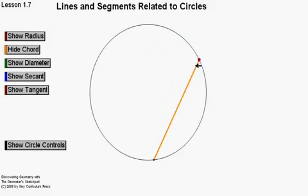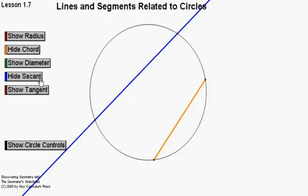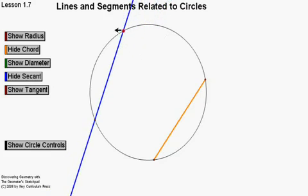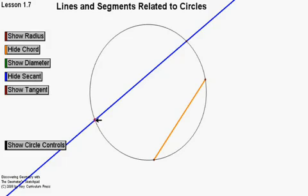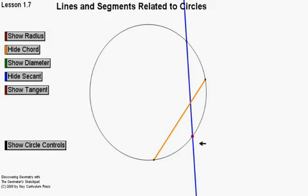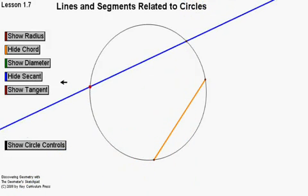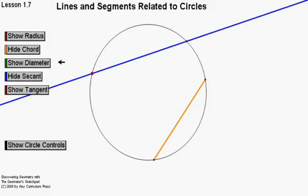Now, what's the difference between a chord and a secant? A secant is a line — not a line segment, but a line — that goes through the circle. I can move the points around, but you can see it still remains a line going through the circle, hitting it at two different points on the circle.